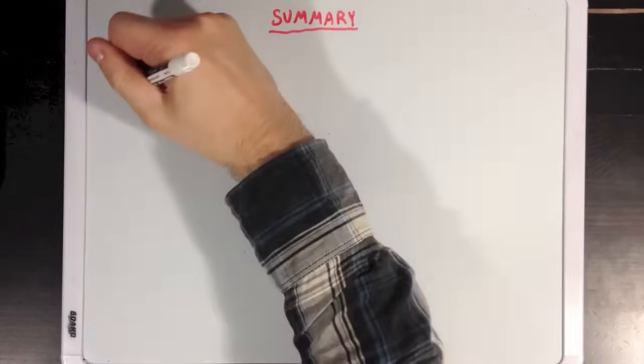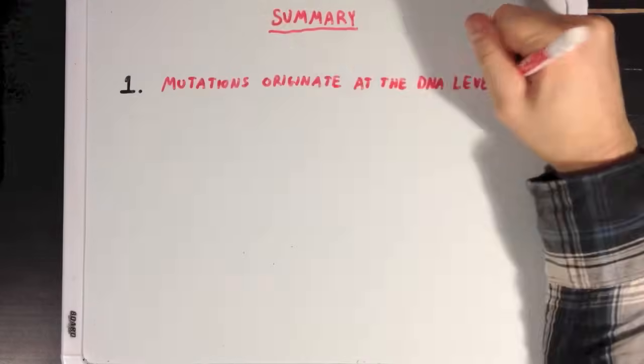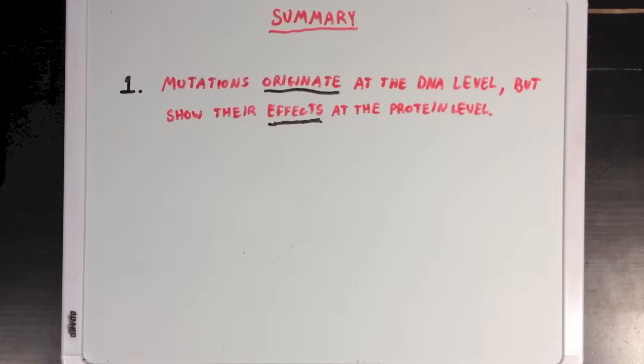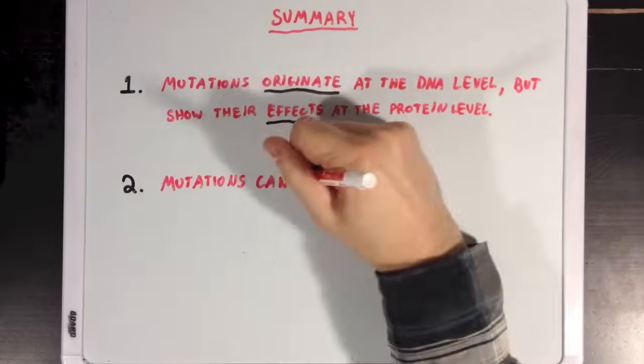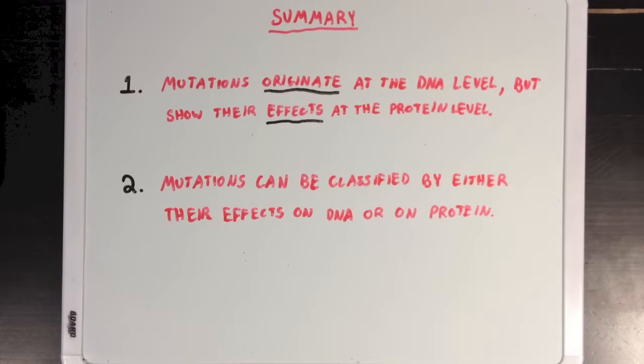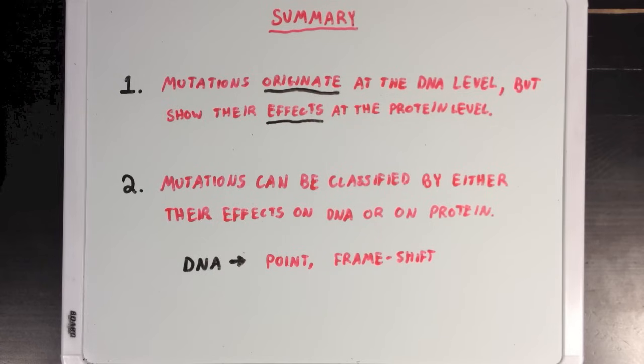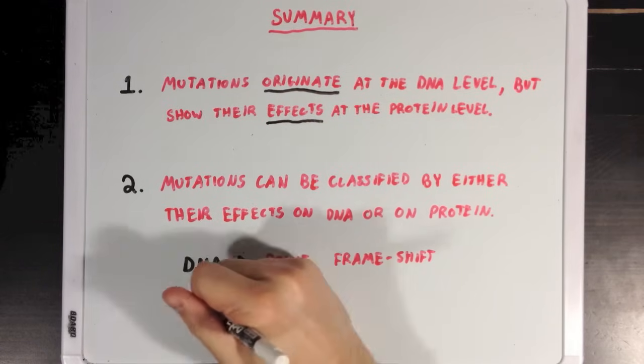So what did we learn? Well first we learned that mutations originate at the DNA level, but show their effects on the protein level. And second, we learned that we can classify different types of mutations by either their effects on DNA or their effects on protein. In reference to DNA, we have point and frame shift mutations. And in reference to protein, we have missense and nonsense mutations.